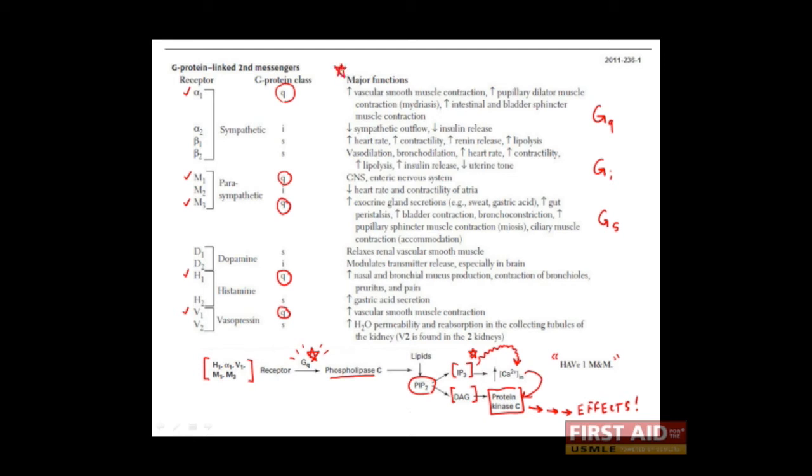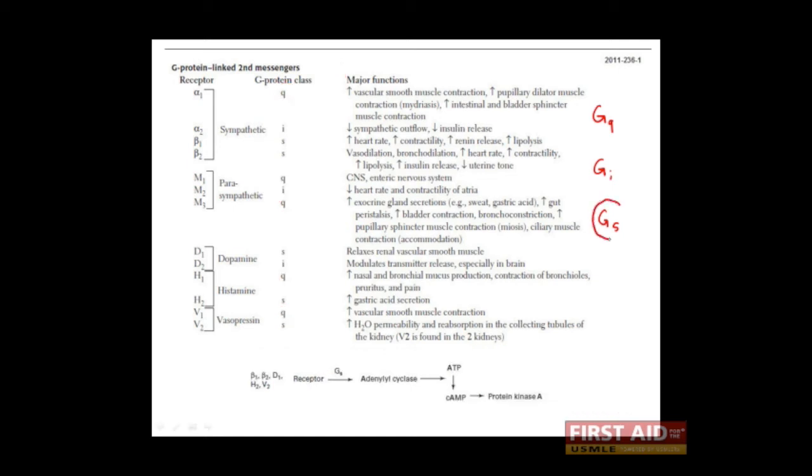You can see that each of these receptors are used by a variety of tissues and they all result in a different physiological response. This would be a good slide to come back to once you've learned about the individual drugs which target these receptors. But for now, let's move on to the next class of G proteins, the GS class.